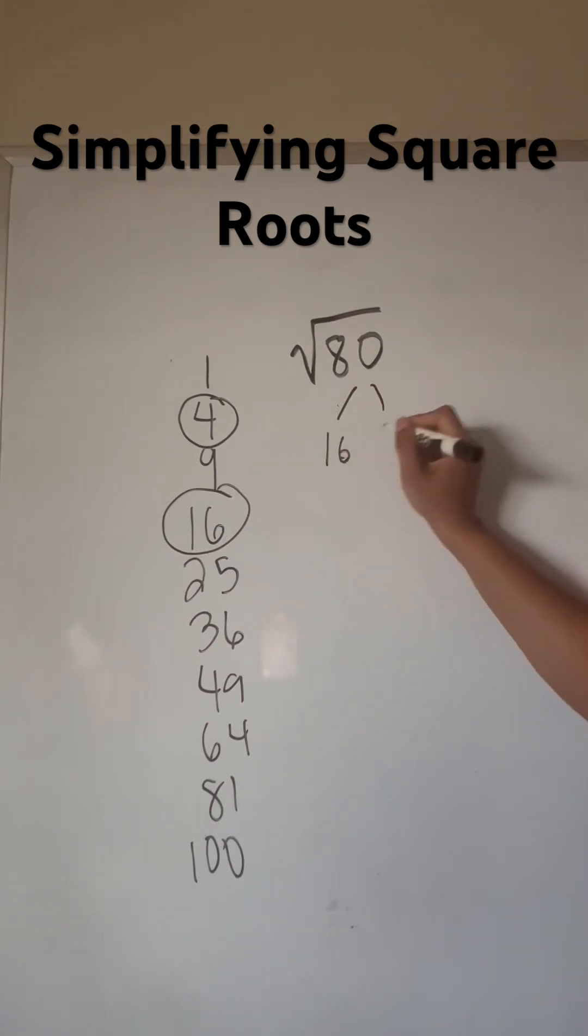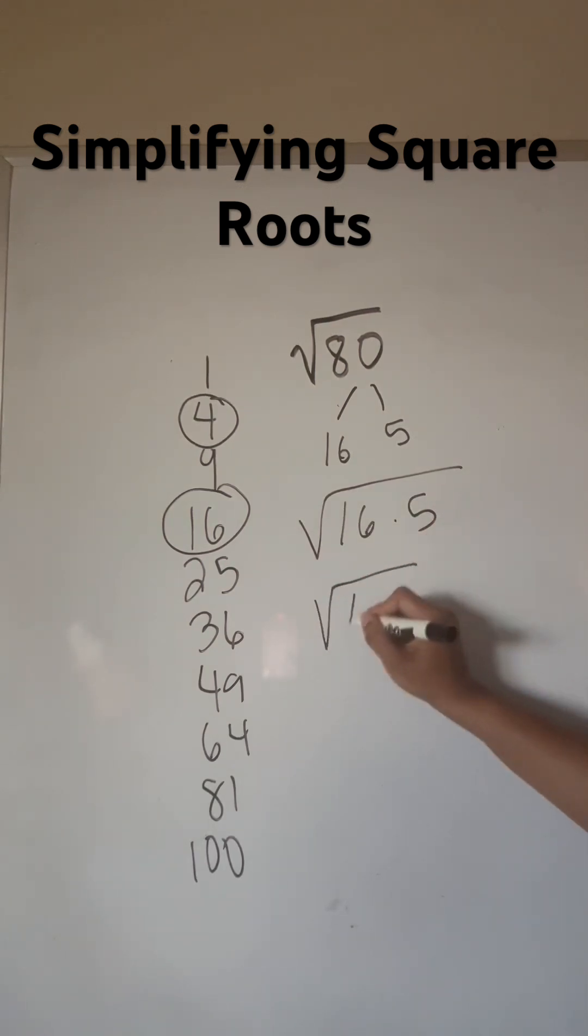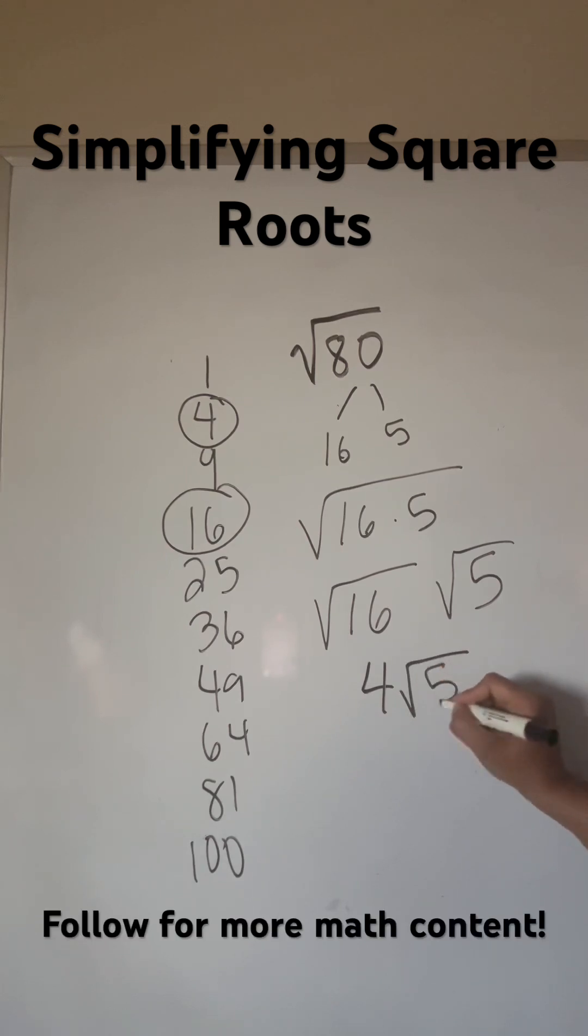80 is 16 times 5, so that becomes the square root of 16 times 5, and you can break up the square root of products. So that's the square root of 16 times the square root of 5. The square root of 16 is 4. We don't know the square root of 5, it's not a whole number, it's going to be a decimal. And so that is how you completely simplify the square root of 80. It is 4 square root of 5.